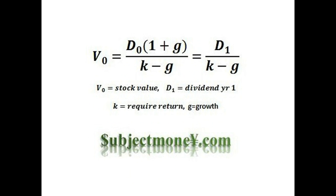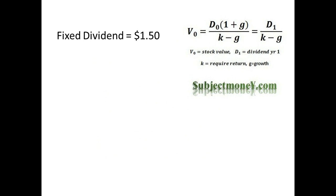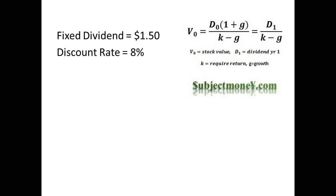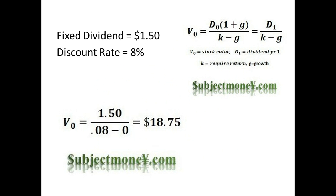We can apply the Constant Growth Dividend Discount Model to preferred stock as well. Preferred stocks usually pay fixed dividends, so there is no dividend growth. Let's assume a preferred stock that pays a fixed dividend of $1.50, and the discount rate is 8%. Notice that since growth is zero, the Constant Growth Dividend Discount Model becomes the equation to solve the present value of a perpetuity.